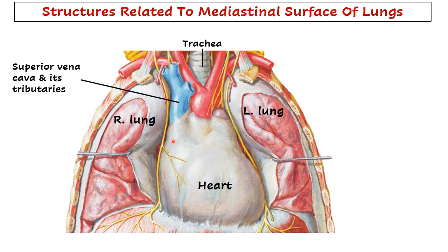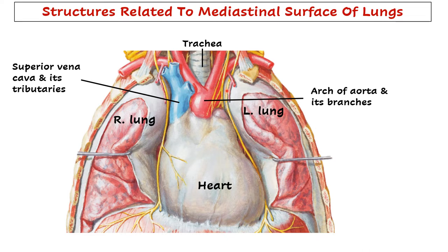On the right side, you will find the right chambers of the heart, plus you can see a big vein - that is the superior vena cava. The inferior vena cava will also come in relation to the right lung. Whereas on the left side, this will be the arch of aorta and its branches, so the aorta and its branches will come in relation to the left lung.